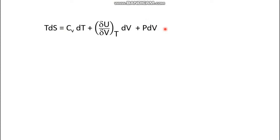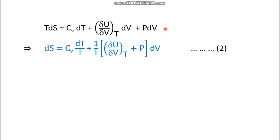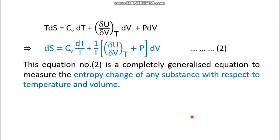Dividing both sides by T, we get dS = (Cv/T) dT + (1/T)[(∂U/∂V)_T + P] dV. This is equation number two. Equation two is a completely generalized equation to measure the entropy change of any substance with respect to temperature and volume. It separates the two variables, temperature and volume, so we can hold either one constant.